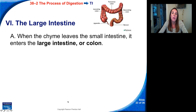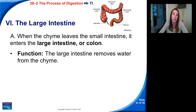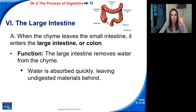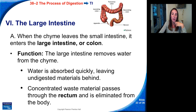After the small intestine, the food enters the large intestine. When chyme leaves the small intestine, it enters the large intestine or colon. The function is to remove water from the chyme — really, the only function of the large intestine is to remove excess water and put it into the bloodstream so that you don't die of dehydration. Water is absorbed quickly, leaving undigested materials behind, and the concentrated waste materials pass through the rectum and are eliminated from the body.